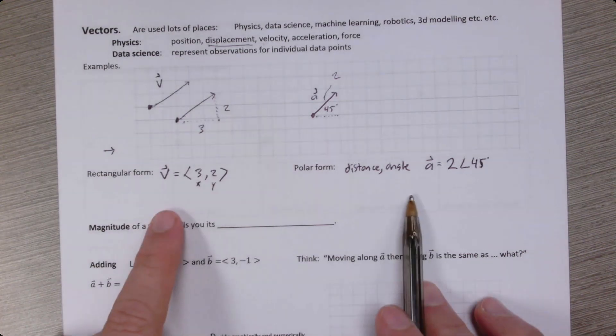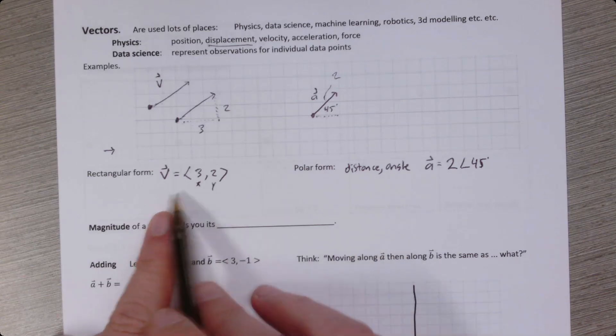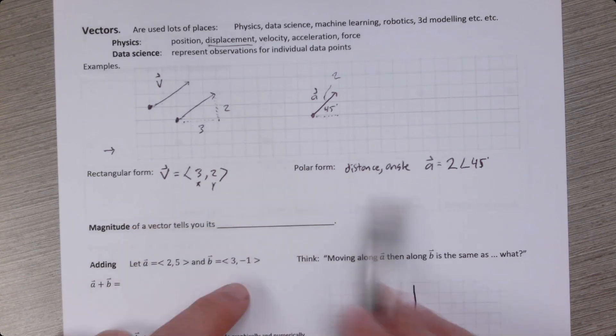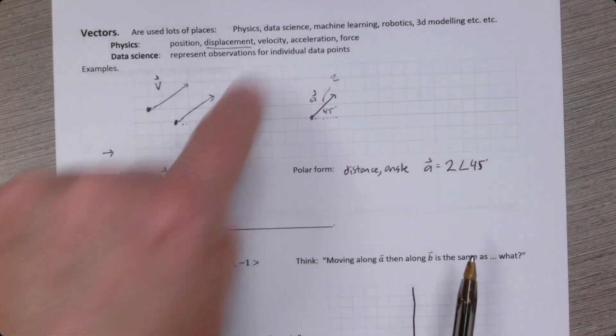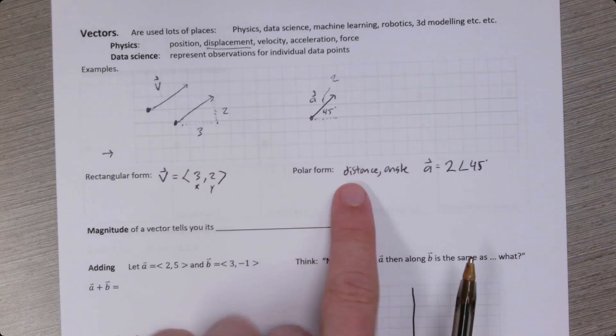Both perspectives are helpful. Some things are easier to do thinking about them this way. Other things are easier thinking about them that way. If you want to rotate a vector, much easier to think about it in polar form.